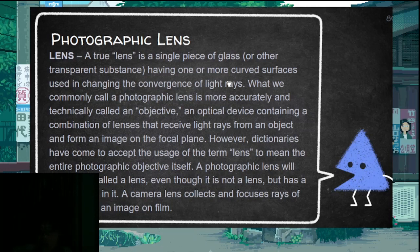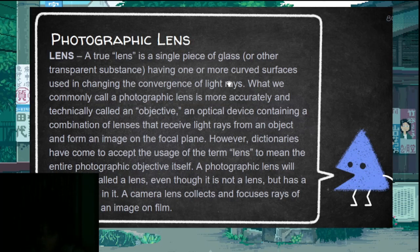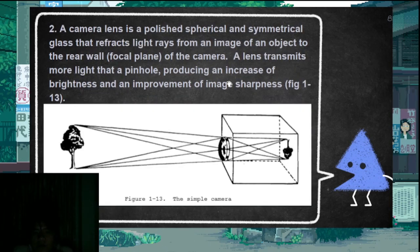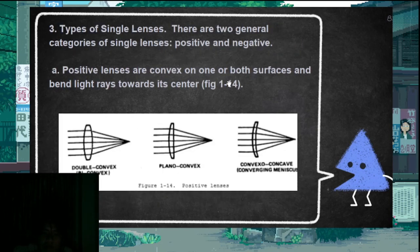Now let's go to the photographic lens. A true lens is a single piece of glass, but the term 'lens' has become popular in photography, so we use it. The actual lens used in cameras is called an objective — it is a combination of multiple lenses. The purpose of the lens is to refract light to raise a sharp image. Camera lenses are designed to function with the least amount of error to reproduce objects in a practical object-image size.